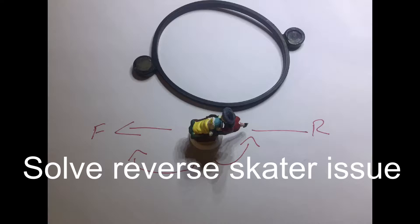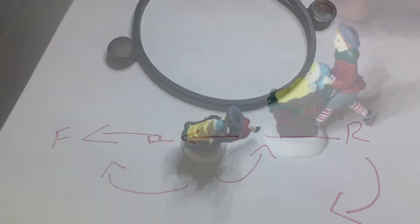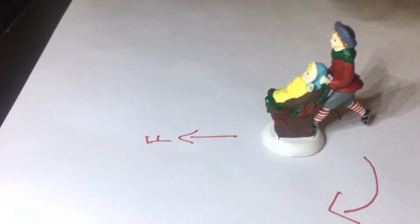Today we're going to talk about solving the reverse figurine problem. This is caused when you change the belt out and sometimes the magnets are not in the same polarity as the original figurine.